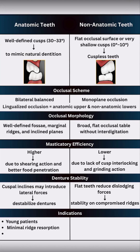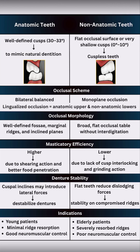Use anatomic teeth for younger patients with minimal resorption and good neuromuscular control. Use non-anatomic teeth for elderly patients with severely resorbed ridges or poor neuromuscular control. Always select teeth not just by textbook — match them to your patient's neuromuscular ability, aesthetic needs, and ridge condition.